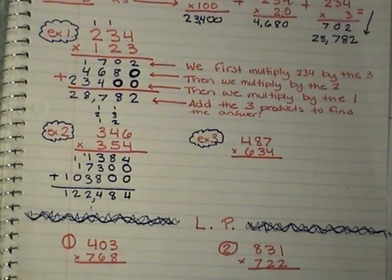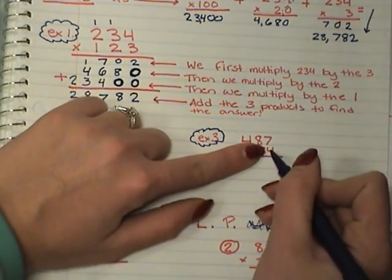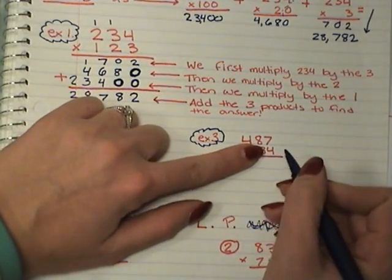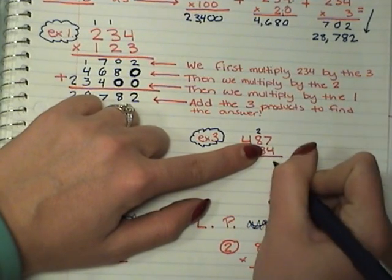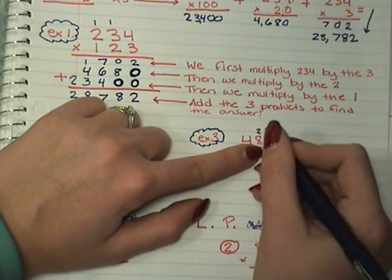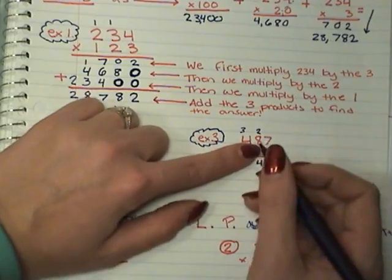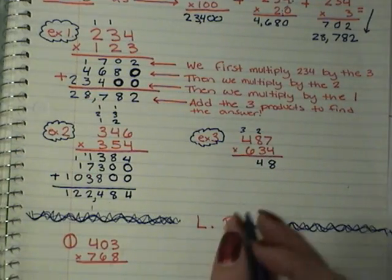Alright. Again. I would try, if you didn't try the first one by yourself, try this one by yourself. And then check to see if you did it the same way. Alright. Here we go. 4 times 7, 28. 4 times 8, 32, 33, 34. 4 times 4 is 16, plus 3, 16, 17, 18, and 19.